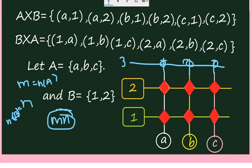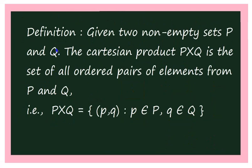Now let us define the cross product of two sets. Given two non-empty sets P and Q, the Cartesian product — also called cross product — P cross Q is the set of all ordered pairs of elements from P and Q. That is, P cross Q = {(p, q) such that p belongs to P and q belongs to Q}. This is the definition of P cross Q.